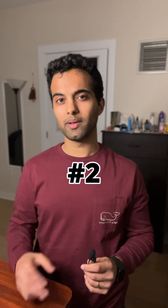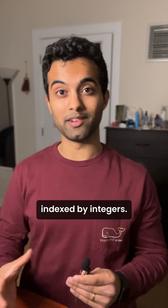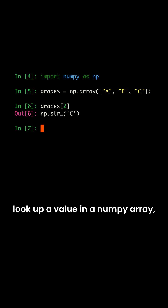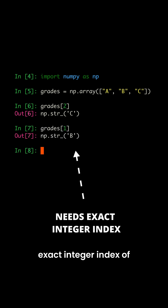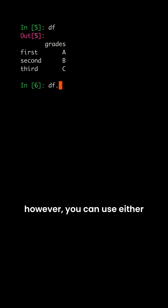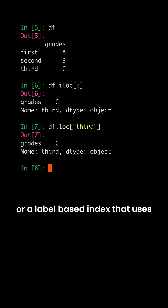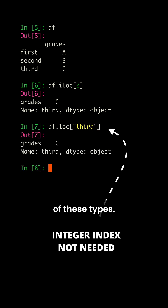Number two: indexing. NumPy arrays have to be indexed by integers, meaning that whenever you want to look up a value in a NumPy array, you have to know the exact integer index of where it's located. With Pandas DataFrames, however, you can use either an integer-based index or a label-based index that uses something like a string, float, or even some combination of these types.